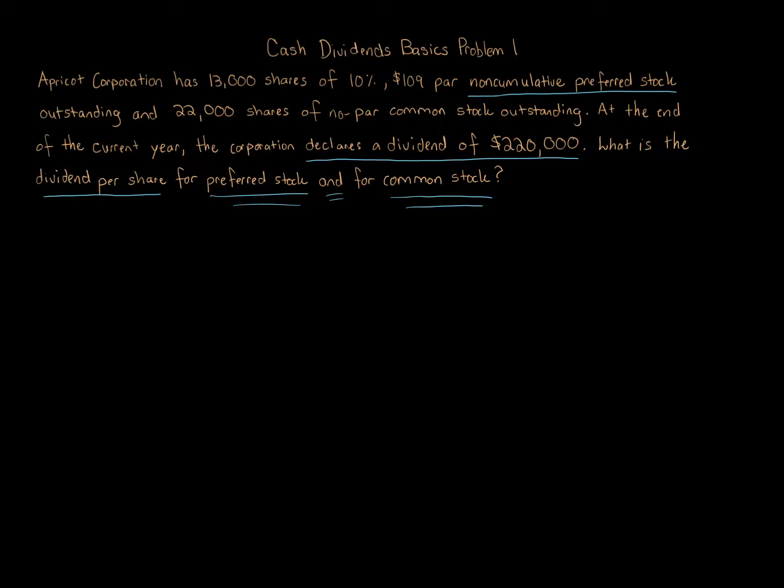There's cumulative and non-cumulative preferred stock. Non-cumulative, you don't get the arrears. Cumulative, you do. Whenever you have a cumulative problem, the question is going to get a little bit more involved, more steps. When it's non-cumulative, we can take a breath. It's a lot simpler. We just go through the information given to us and we determine the amount for the preferred and for the common.